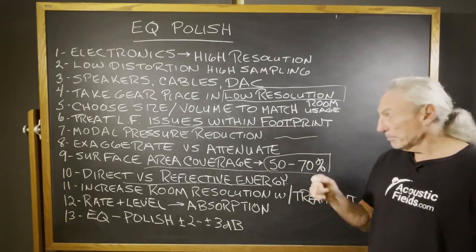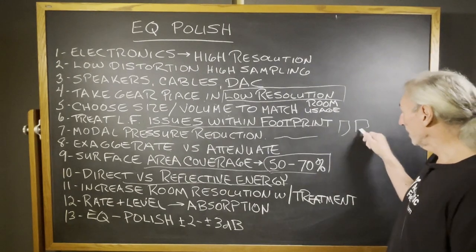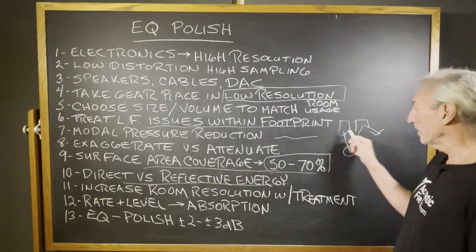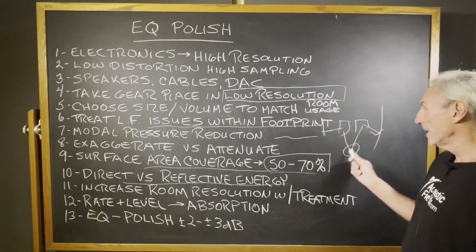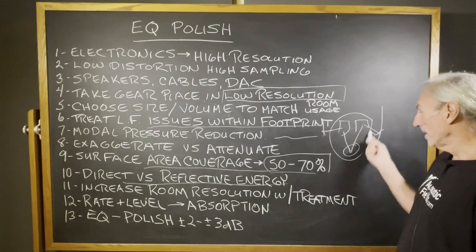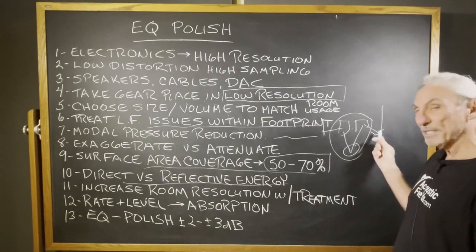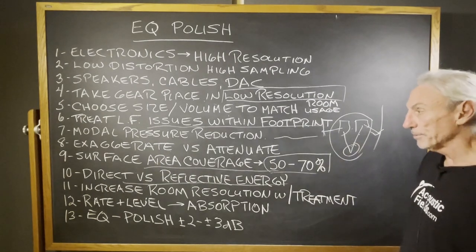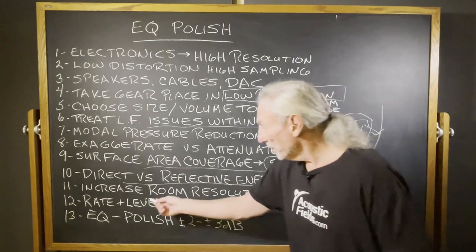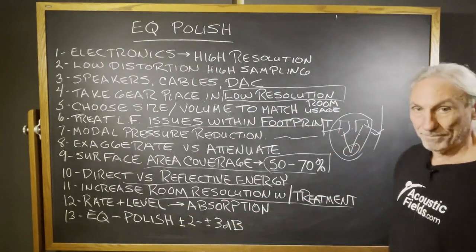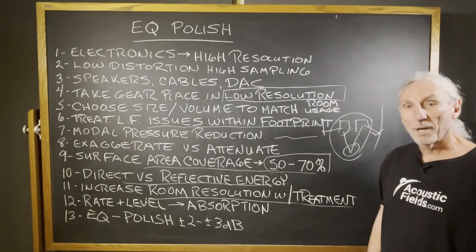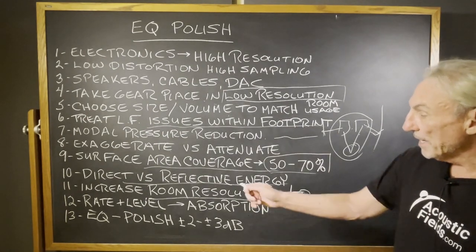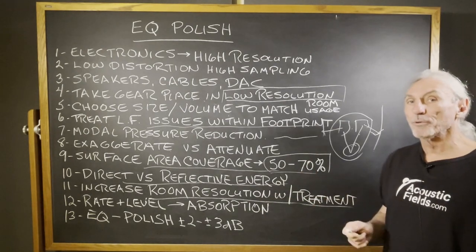We have to balance that direct energy, which is the energy from the speaker to the listening position. With the wall surfaces we have reflections, but this has to be balanced. We have to minimize the time signature of the reflections in order to get a nice balance between direct and reflected energy. So we increase our room resolution with treatment — that's how you do it. You want to get enough treatment to deal with the issues. Rate and level of absorption are very, very critical, especially for voice.